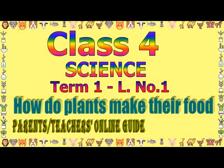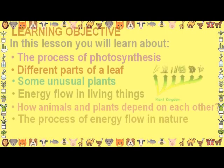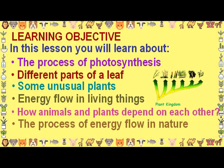Class 4 Science, Term 1, Lesson Number 1: How Do Plants Make Their Food. Learning objective: in this lesson you will learn about the process of photosynthesis and the different parts of a leaf.